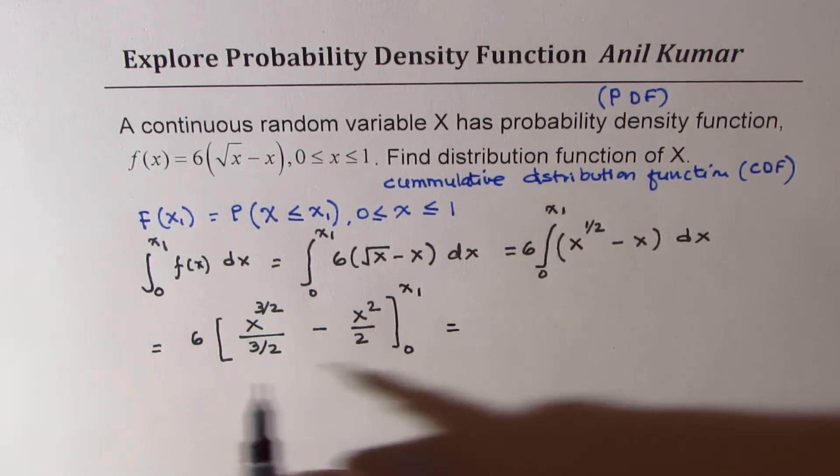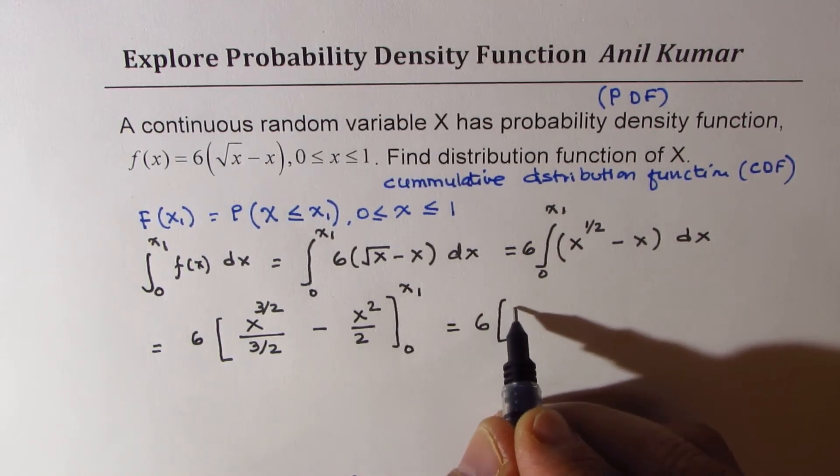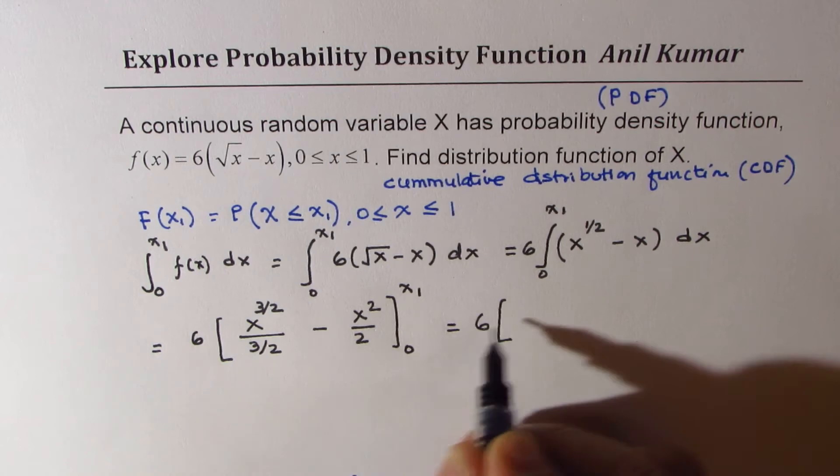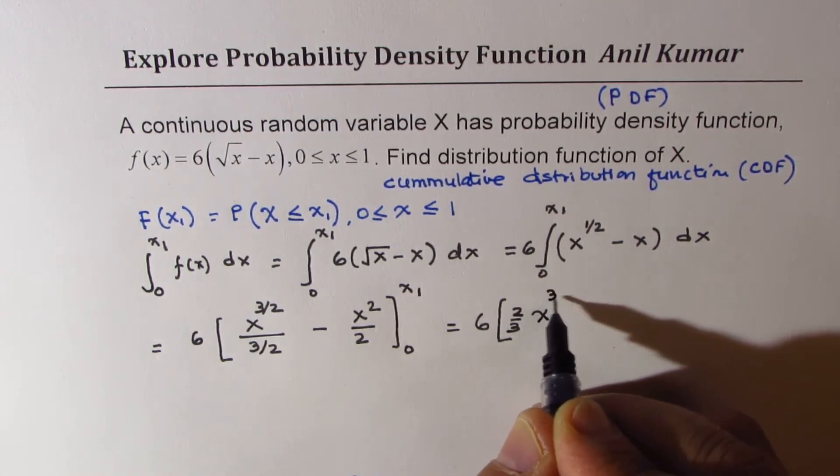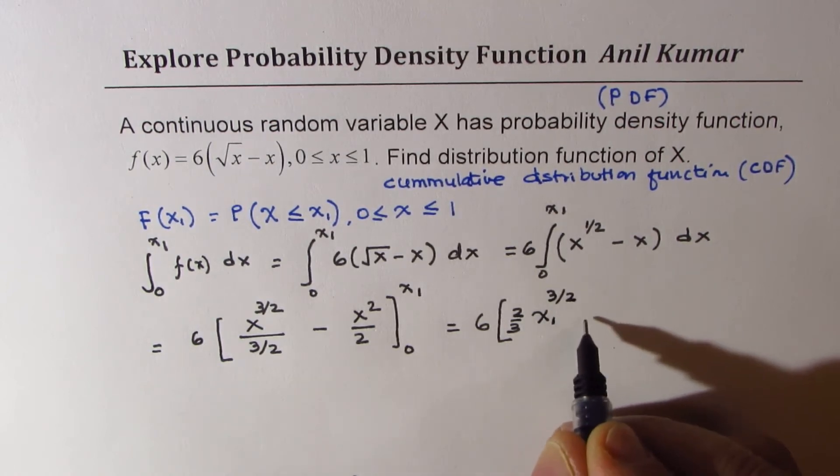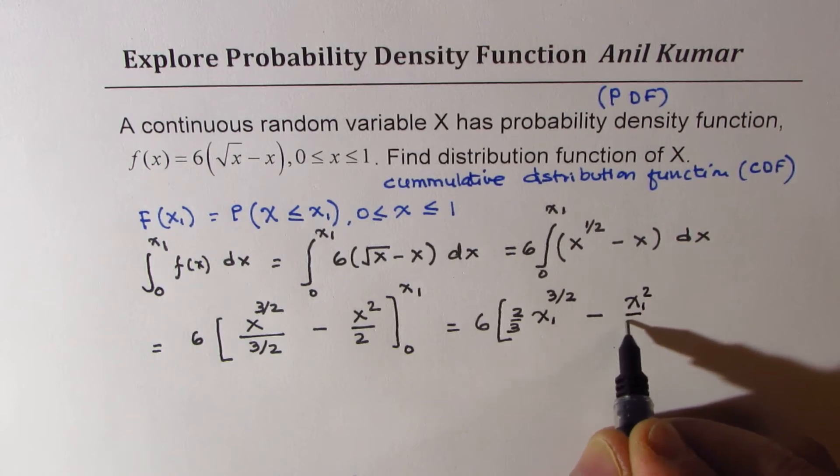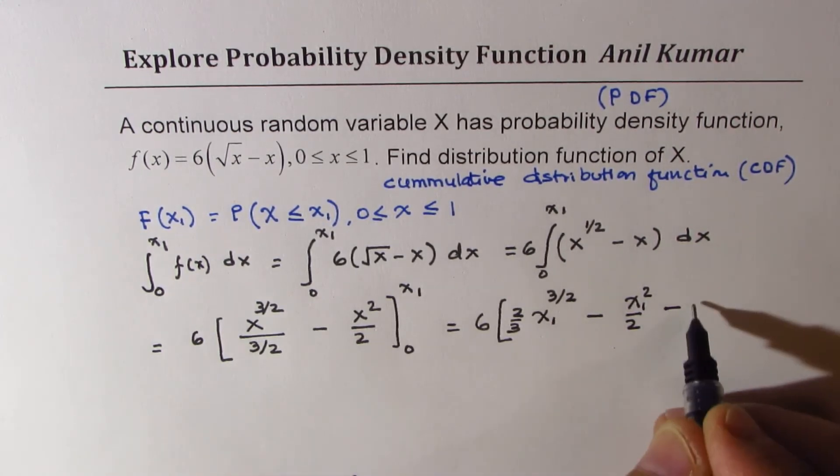Substituting, we get the value 6 times: 2 over 3 times x1 to the power of 3 over 2, minus x1 squared over 2. And when you put 0, both will be 0.